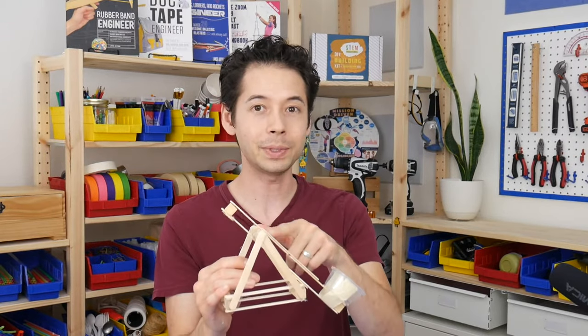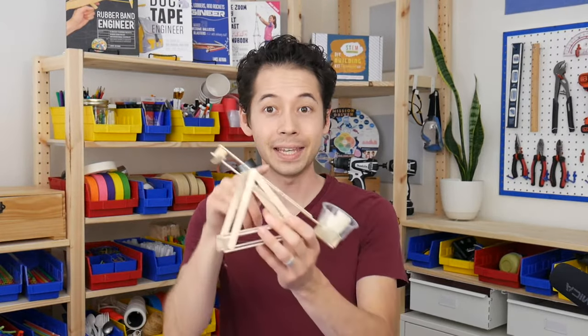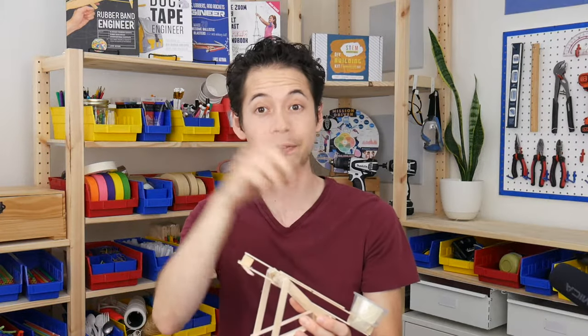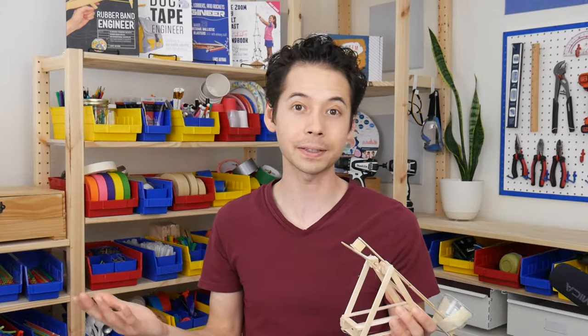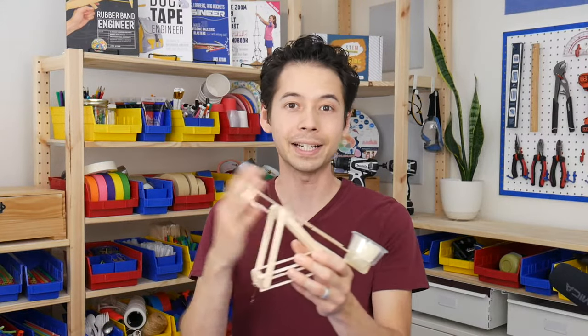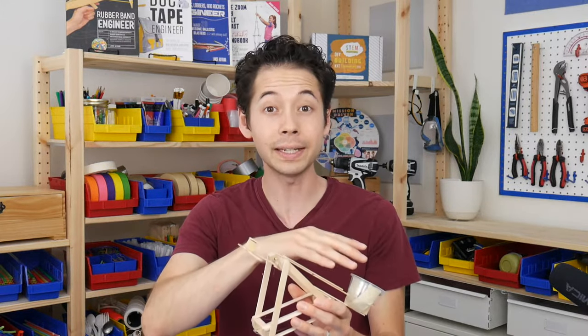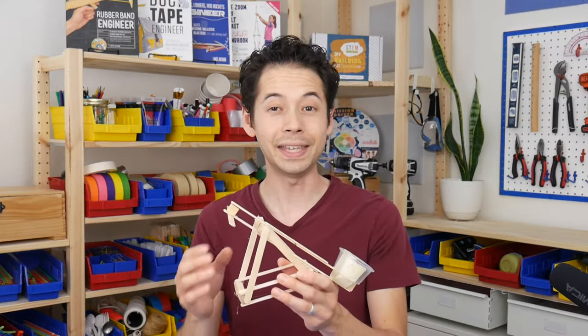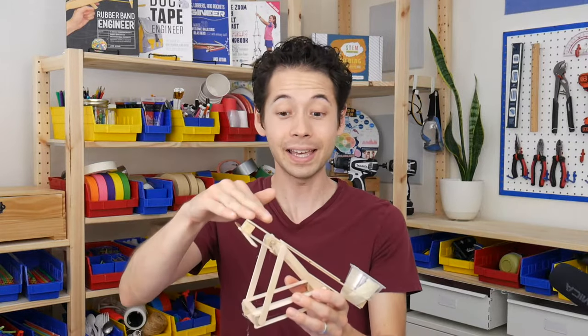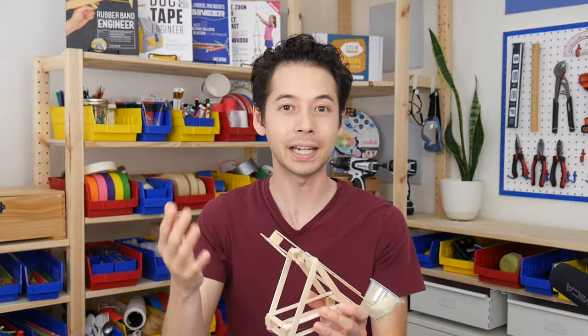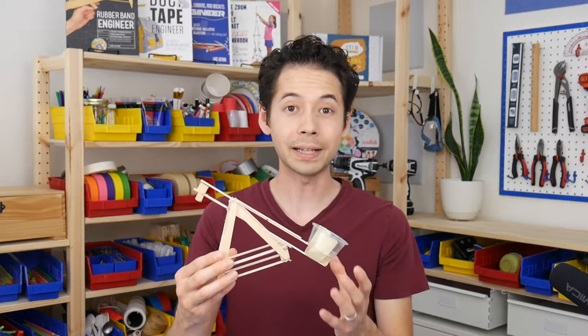So again, you can experiment with the length of the catapult arm. If the arm was even longer then when you push down it might go even faster and shoot the projectiles farther. But with more length comes more weight so you'd have to put more energy into this end to get the catapult arm moving and then up to speed. And if the catapult arm is really long then the dowel might break under the force of trying to lift up such a heavy arm. So there's definitely a balance to explore.